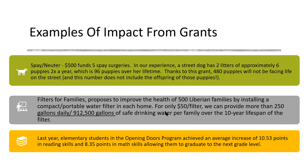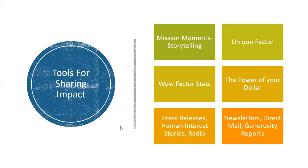Filters for Families proposes to improve the health of 500 Liberian families by installing compact portable water filters in each home. For only a $50 filter, they can provide more than 250 gallons daily — or 912,500 gallons of safe drinking water per family over the 10-year lifespan of the filter. For my appeal, I need $50, but I'm giving 10 years and nearly a million gallons of water for a family. We can share these types of stories and mission moments at local civic clubs and faith groups. We always want to know how do we present our organization with a unique factor.